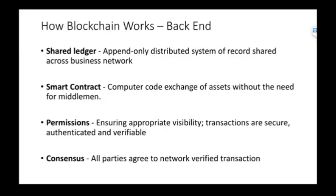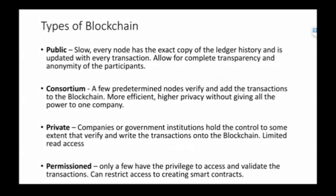There are types of blockchain. Public blockchain is very slow — each node has to be updated on every transaction, but it allows for complete transparency. Consortium blockchain is more efficient because only certain nodes can verify each transaction while increasing privacy. Private blockchain means companies or governments control the verification process. With permissions, you can restrict access to creating a smart contract.